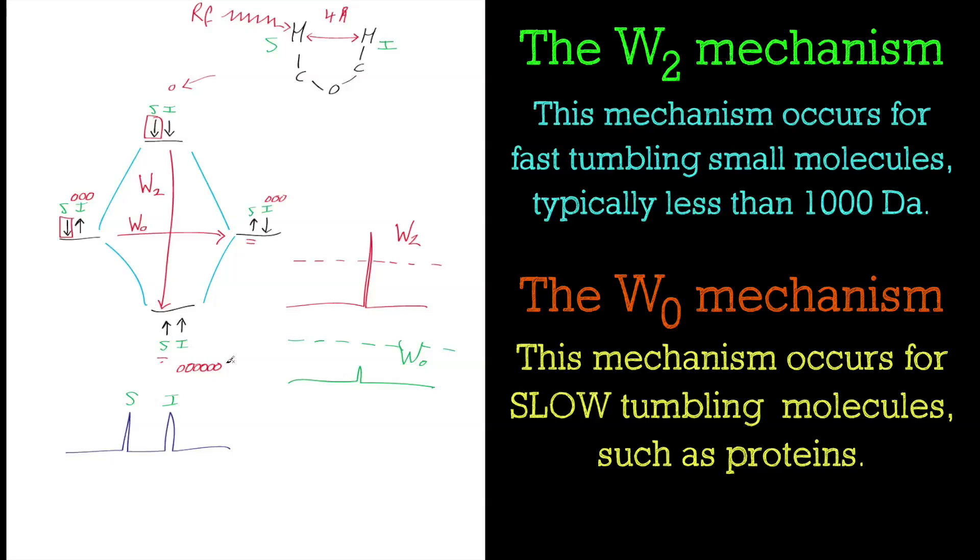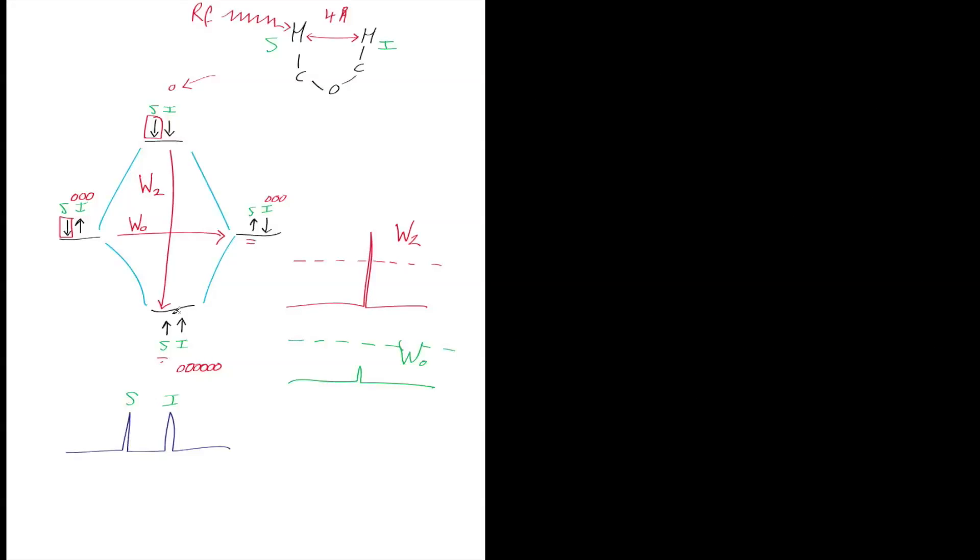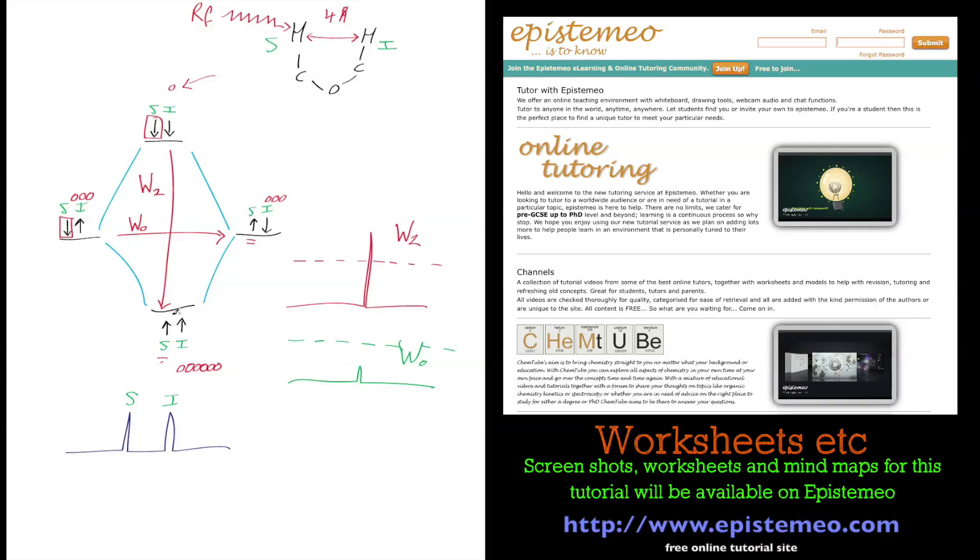There are obviously hundreds and thousands of different uses for NOE, and I do urge you to have a good look at them in your studies. Hopefully this explained the origin of the NOE effect and why you get an increase or a decrease. If you've got any comments, please comment below. I hope I've explained the use of the population difference. If not, just ask me in the comments. I'll put some screenshots and worksheets and mind map on Epistemio as soon as I can. I hope you enjoyed this tutorial. Until next time, bye for now.